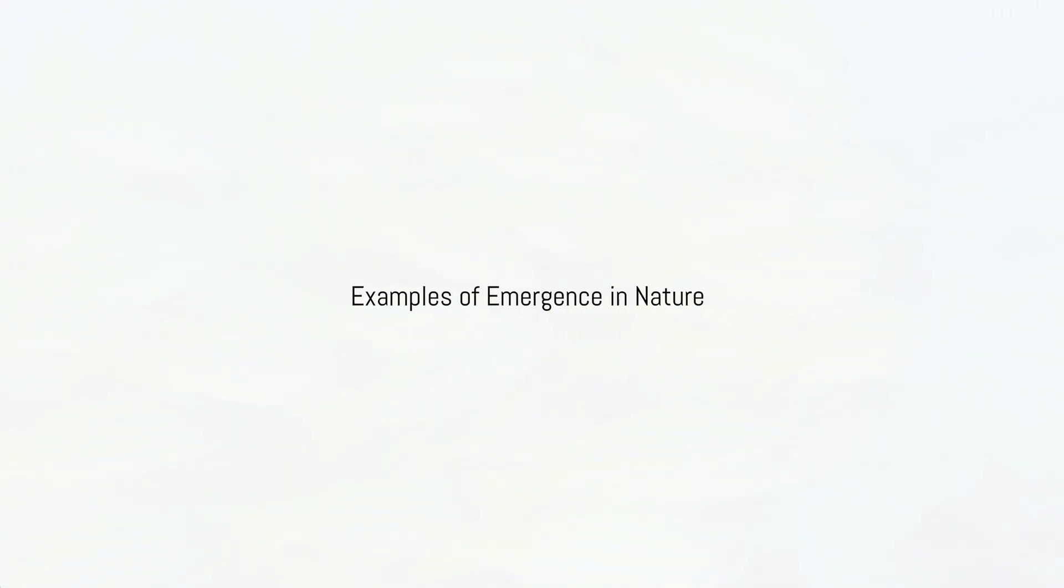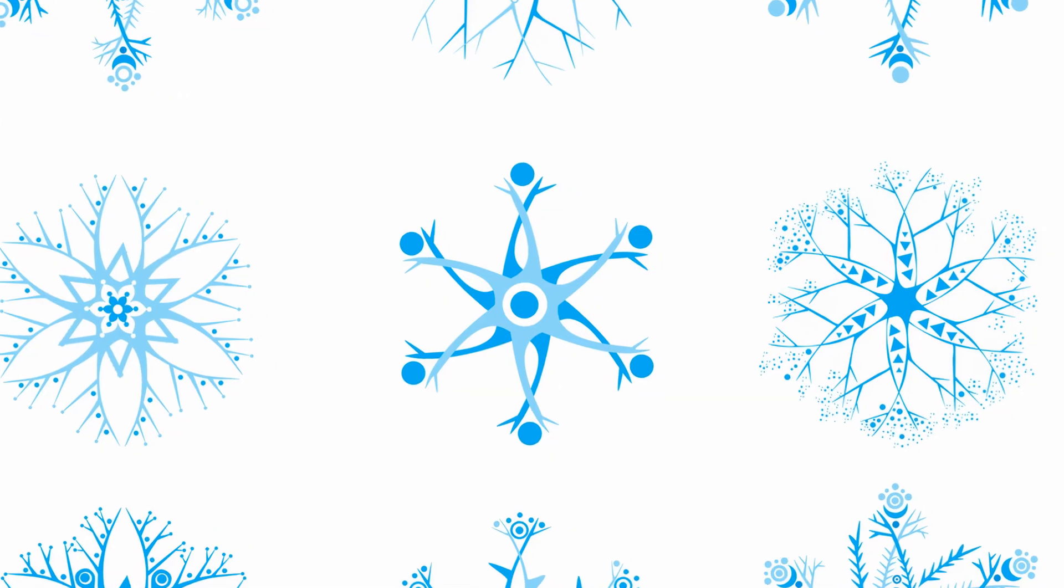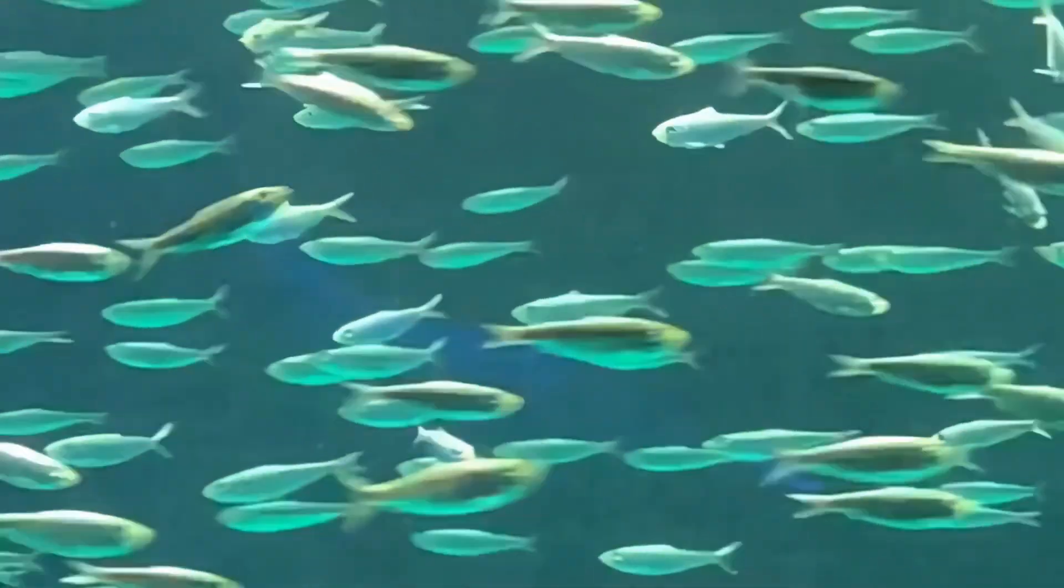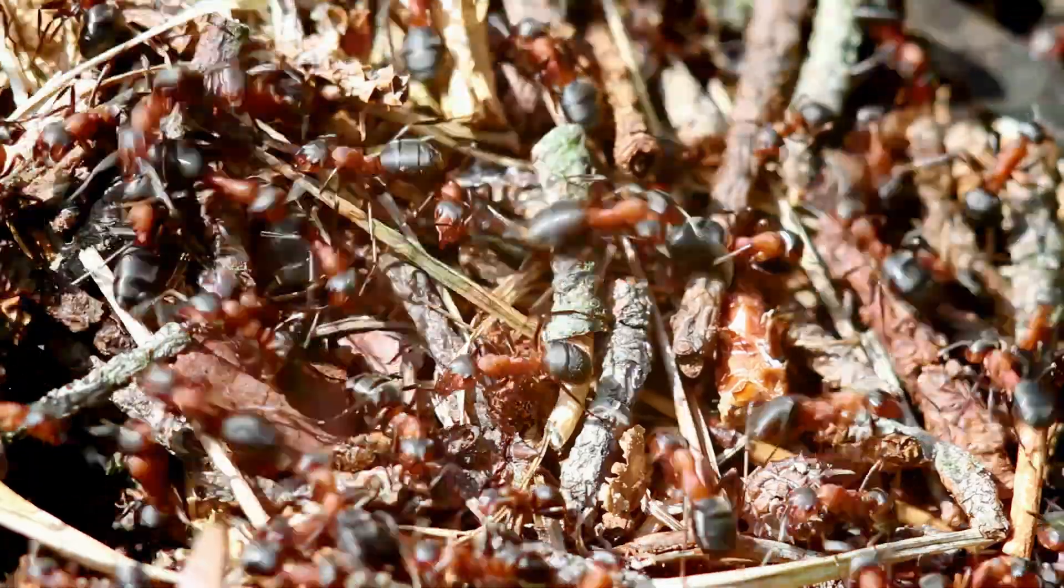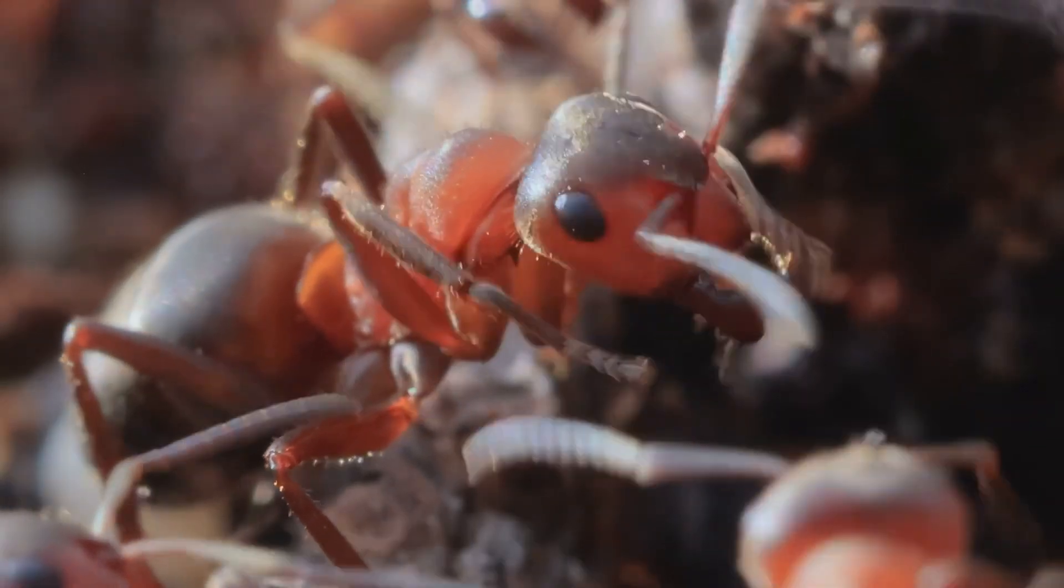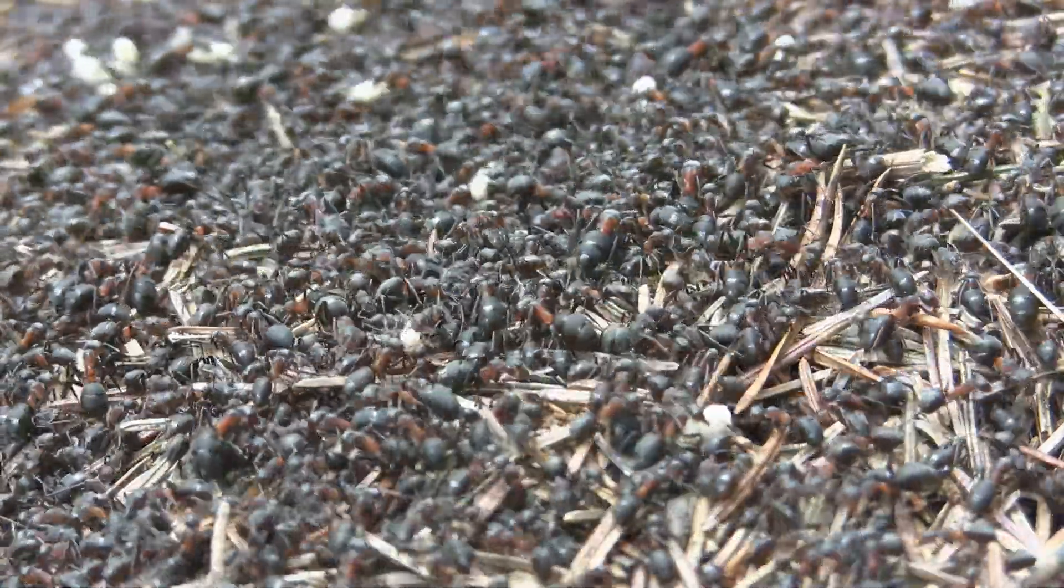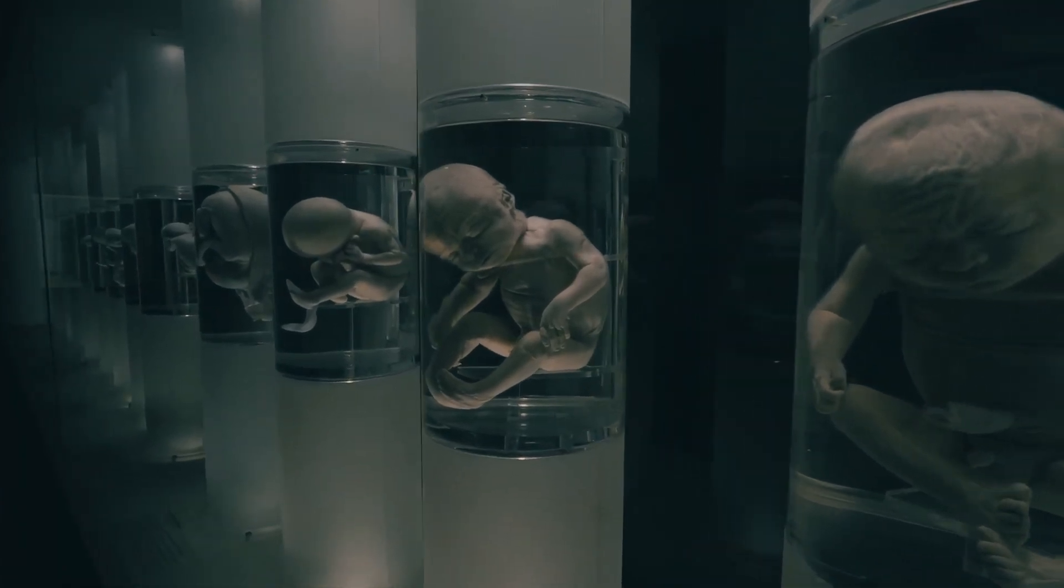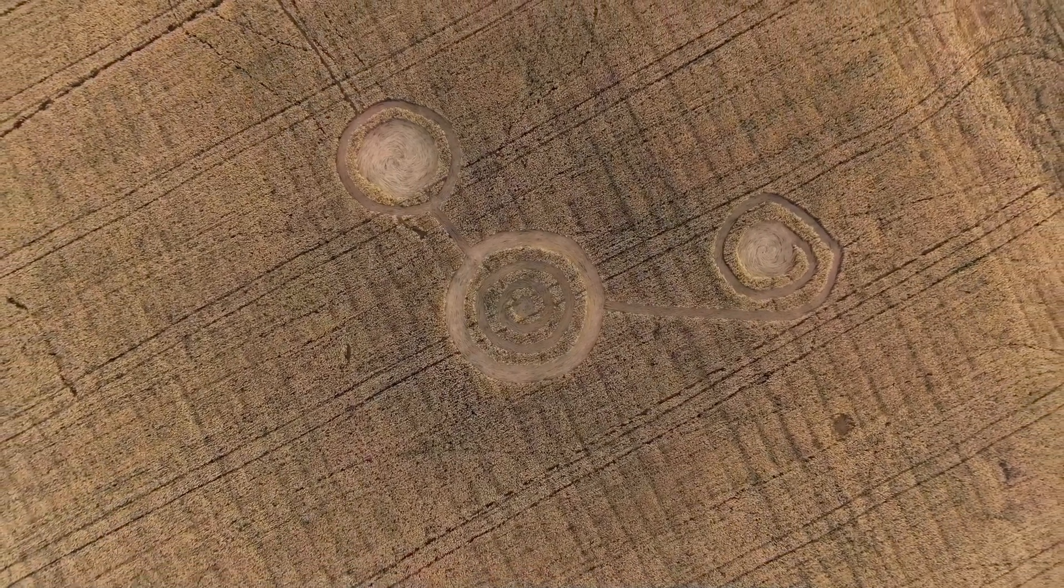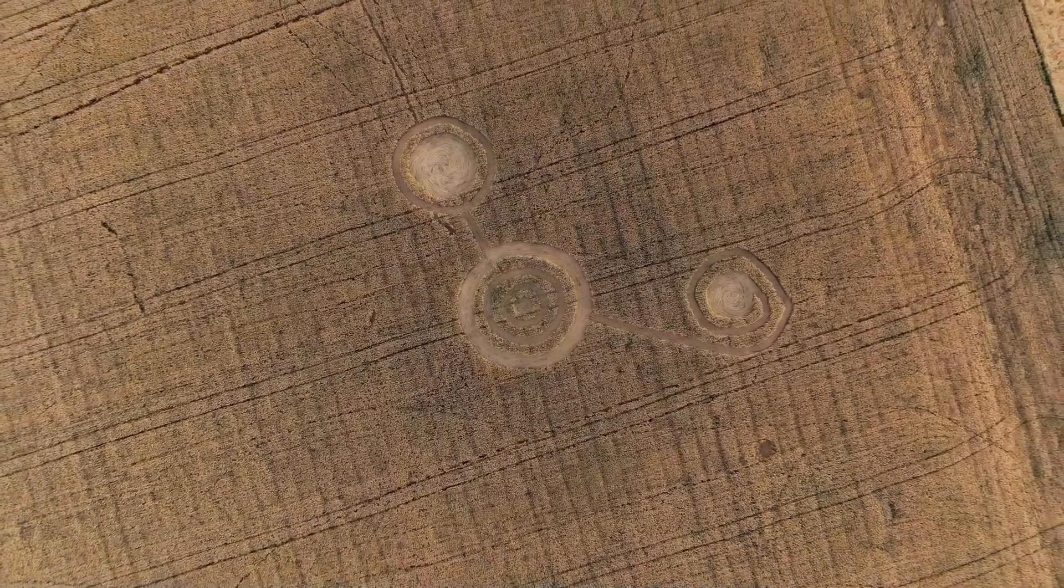From simple rules to complex behavior, examples of emergence in nature. Emergence is a fundamental principle observed across various domains of science. Consider the intricate patterns of a snowflake, each one unique, yet arising from simple interactions. Or the mesmerizing dance of a school of fish. In social insects such as ants, individual ants follow simple rules like following pheromone trails. Collectively, these behaviors give rise to complex colonies. The human body itself is a testament to the power of emergence. Trillions of cells work together, giving rise to the complex organism we call a human being.